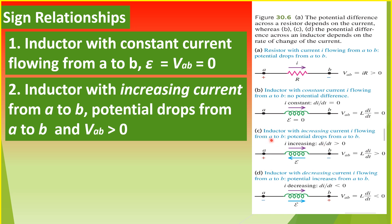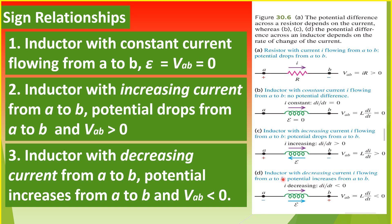In caption C, there is now an increasing current passing through the inductor from point A to point B. And hence, the potential drops from point A to point B, and we say that the potential difference V sub AB is greater than zero, or it is positive. And finally, as shown in caption D, when the current passing through the inductor from point A to point B is decreasing, the potential increases from point A to B, which means that the potential difference V sub AB is less than zero, or it is negative.